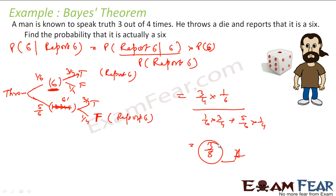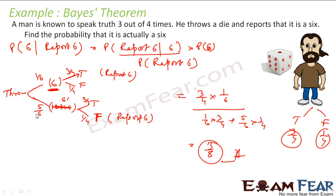So you can trust him 3/8 times if he is telling 6. This guy either says true or false — true 3/4 times and false 1/4 times. You throw a die, you may get 6 with probability 1/6, or not 6 with probability 5/6. When you get 6, he reports 6 with probability 3/4. When you don't get 6, he still reports 6 with probability 1/4. Applying Bayes theorem gives 3/8.